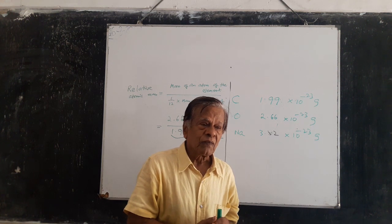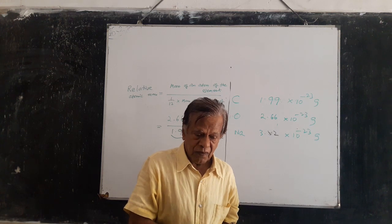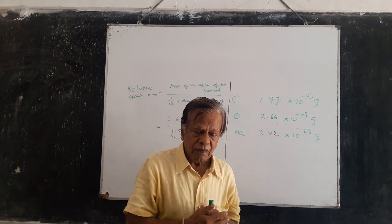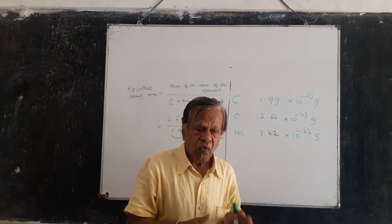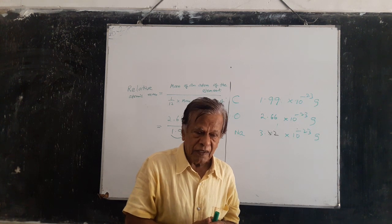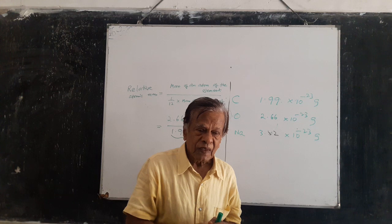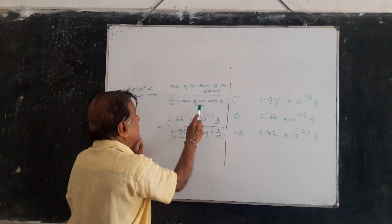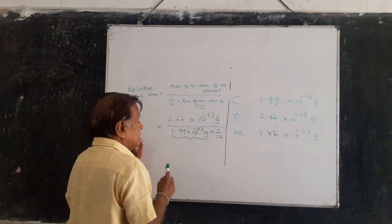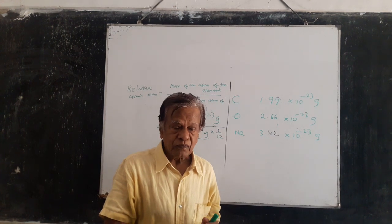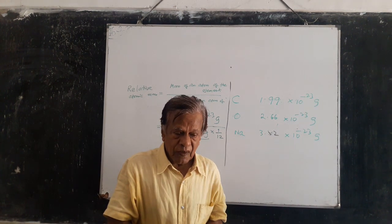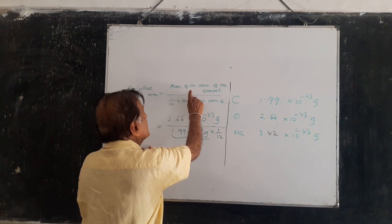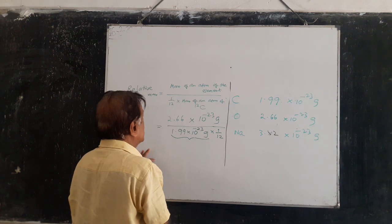Here we use a standard mass for atomic mass. The standard unit for atomic masses is taken as 1/12 of the mass of an atom of carbon-12 (C12), which is used as the standard. You compare the masses of different atoms of different elements with this standard.